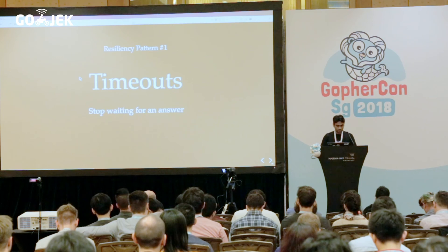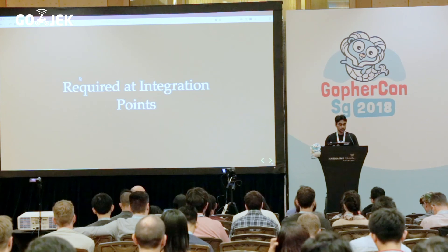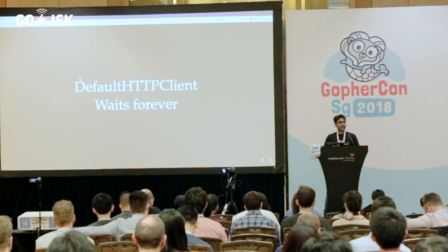The next pattern is timeouts. Timeouts are extremely important — they say you have to stop waiting for an answer when you know it won't come back. Timeouts are required at all your integration points in your microservice. Integration points are where your app makes an external call to some other dependent service or to your storage layer. Those are your basic points of failure, because you are now over an unreliable medium, which is the network. The sad thing is most of us initialize an HTTP client in Go and the default HTTP client waits forever — the documentation itself says the default HTTP client is unsafe in production.